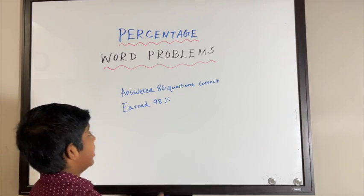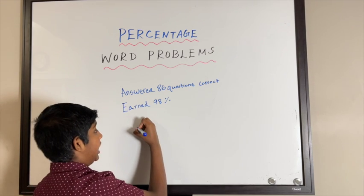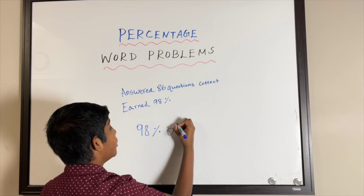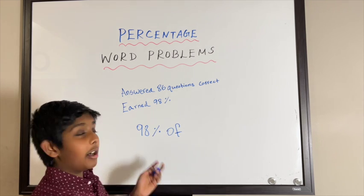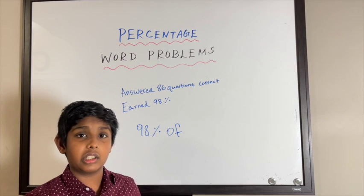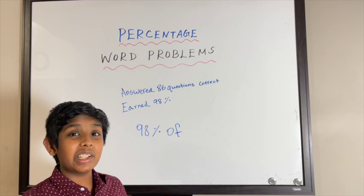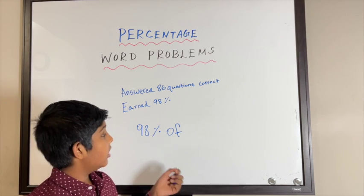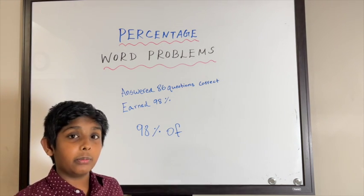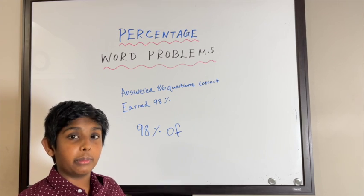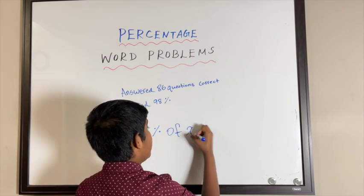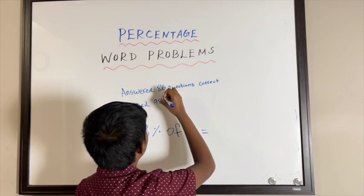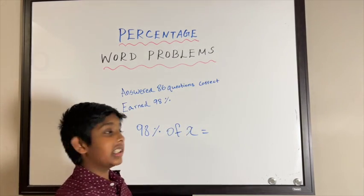Now let's write it down like what we did for the first question. So we're going to do 98 percent of—we don't know how many questions there were in total, so that's a mystery value we're trying to find. I'm going to put a variable of x for now, and that's our mystery value. And that equals to 86 questions he answered correctly.